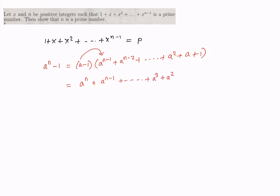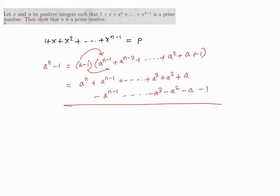When you multiply with -1, you get -a^(n-1), -a³, -a², -a, -1. Everything in the middle cancels and you are left with a^n - 1. This is a very standard factorization and we will be using it over and over again for the purpose of this problem.